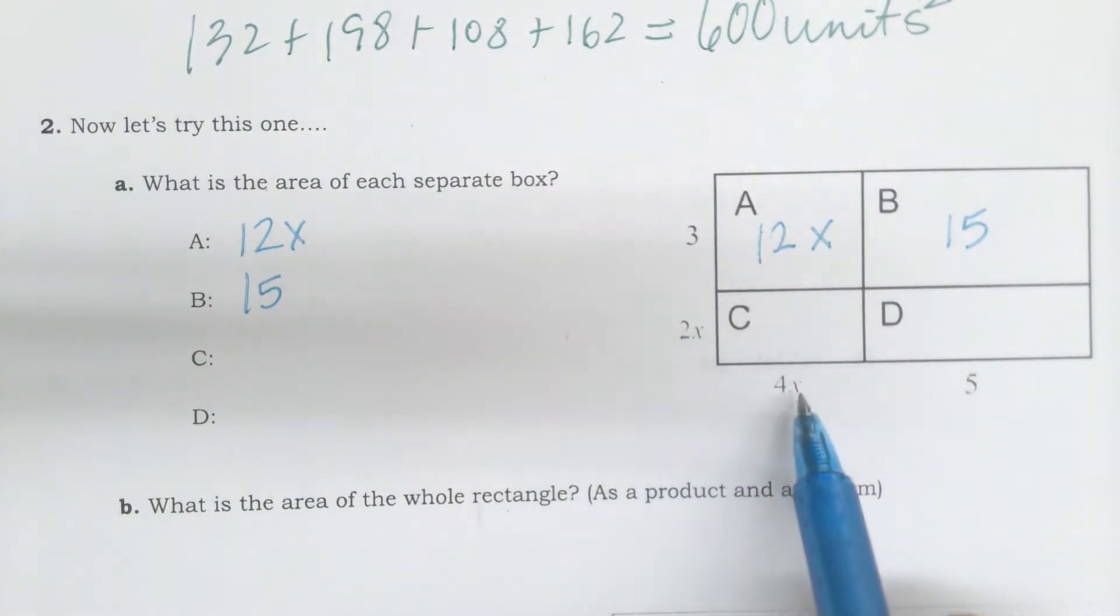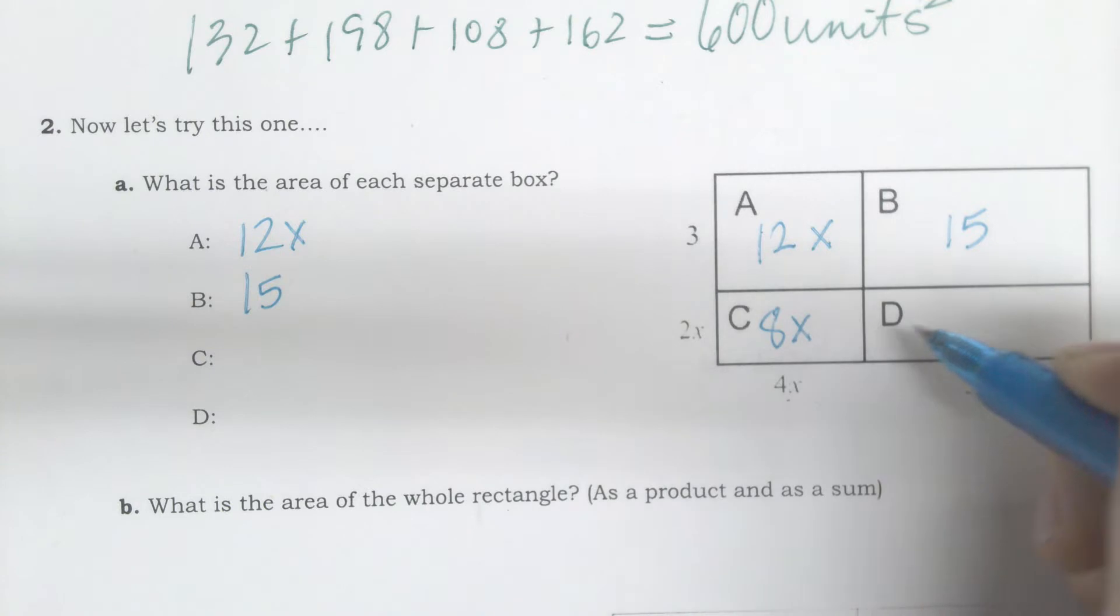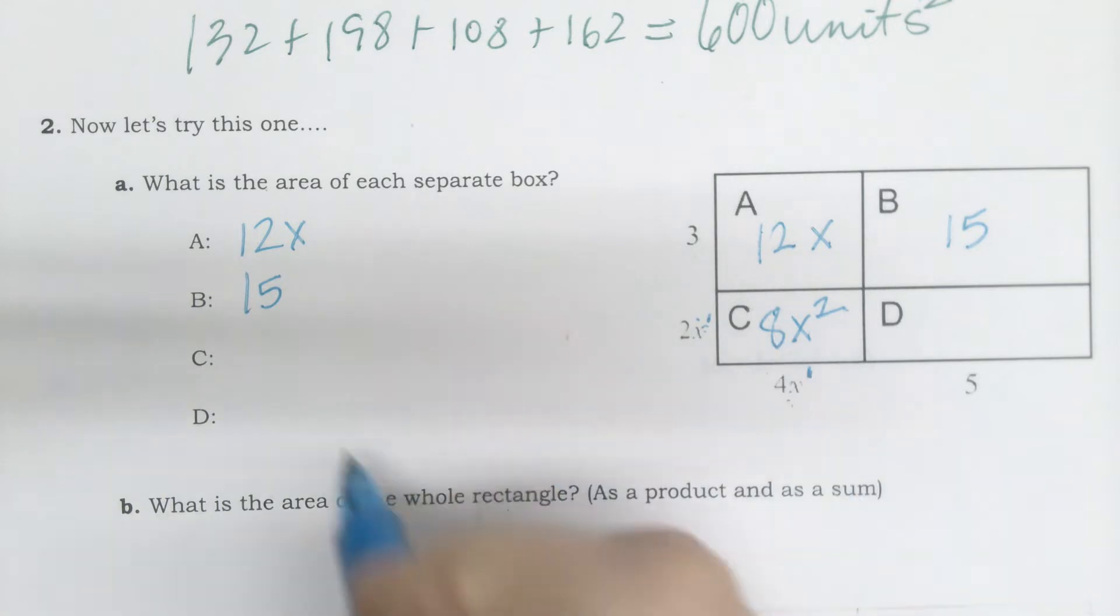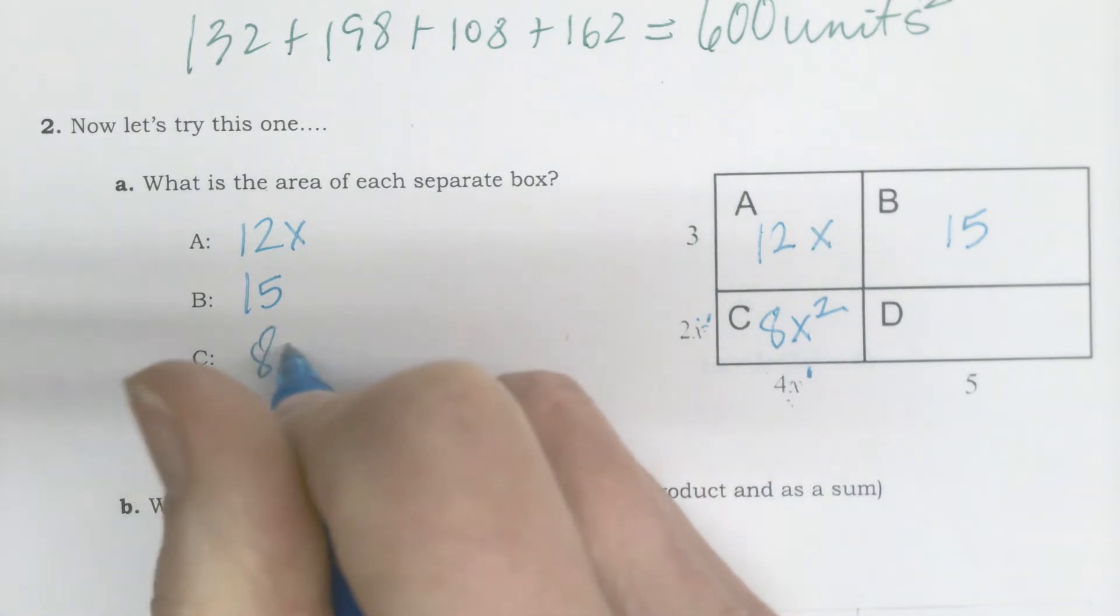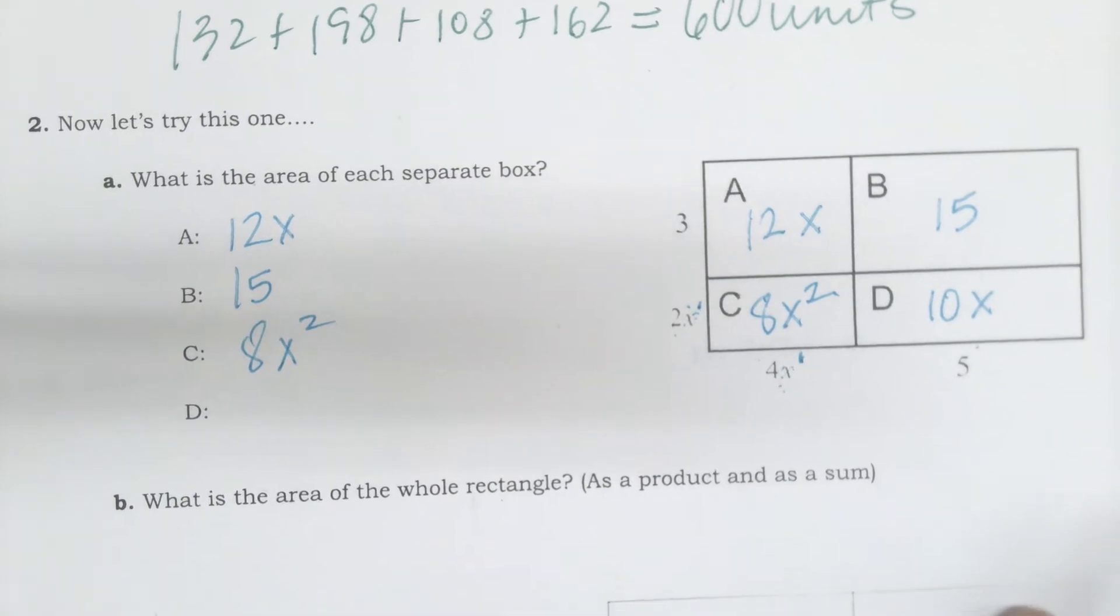2x times 4x is 8x squared, because I have a power of 1 and I add those powers to get x to the 2nd. And then 2x times 5 is 10x.